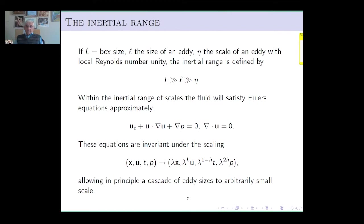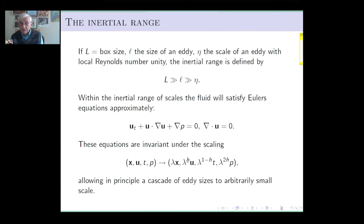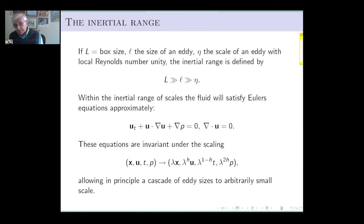We're not going to be dealing with many properties of Euler's equations — the full dynamics is what is responsible for the true complexity of the inertial range — but the one thing we will depend upon is the scaling invariance of the equations, which allows us to introduce a lambda scale. When we multiply by coordinates, this reduces the scale of a structure, and if we lower the viscosity by a certain power of this lambda and also stretch t and the pressure p, the equations are invariant. This in principle means we can consider the possibility of arbitrarily small structures through some sort of hierarchy.